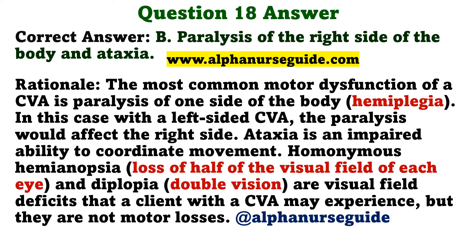Rationale: the most common motor dysfunction of a CVA is paralysis of one side of the body. In this case, with a left-sided CVA, the paralysis would affect the right side. Ataxia is an impaired ability to coordinate movement. Homonymous hemianopsia and diplopia are visual field deficits that a client with a CVA may experience, but they are not motor losses.